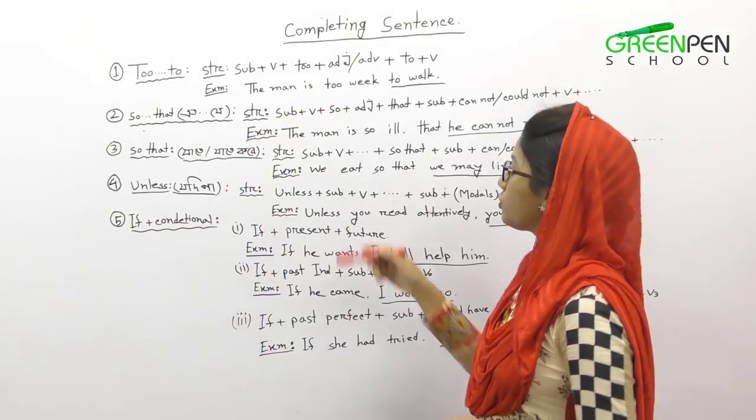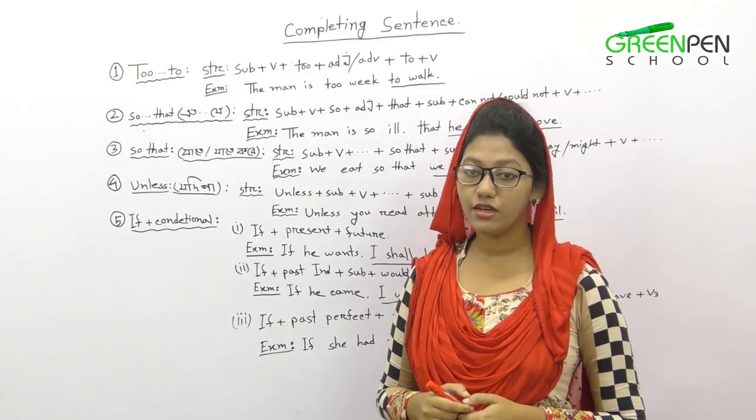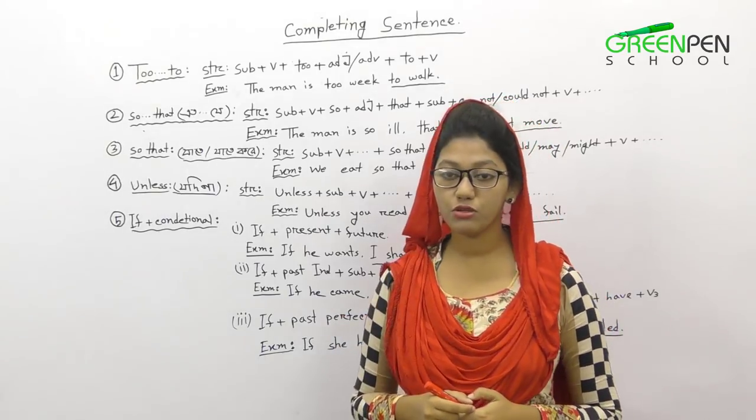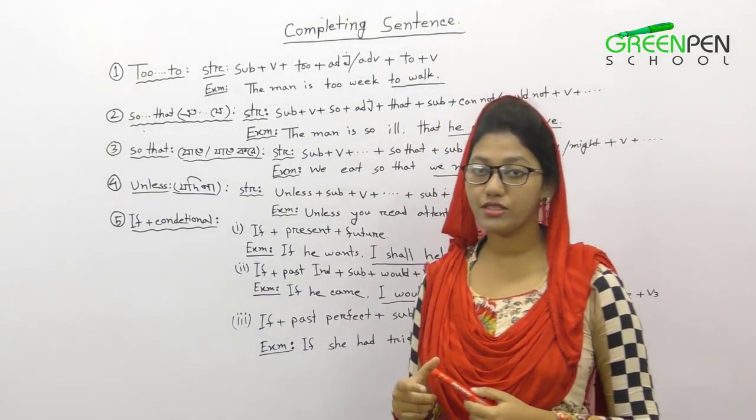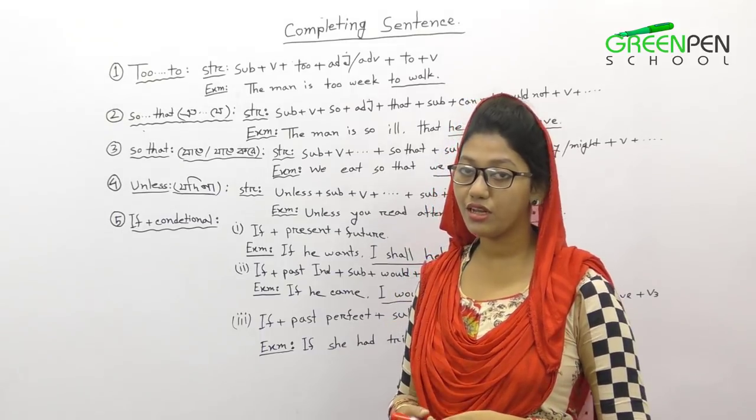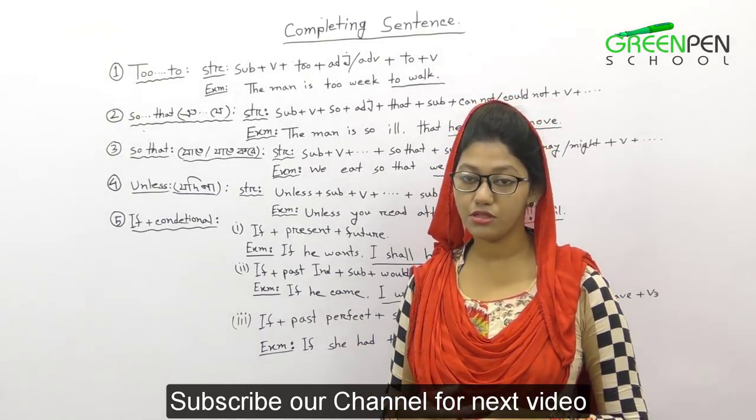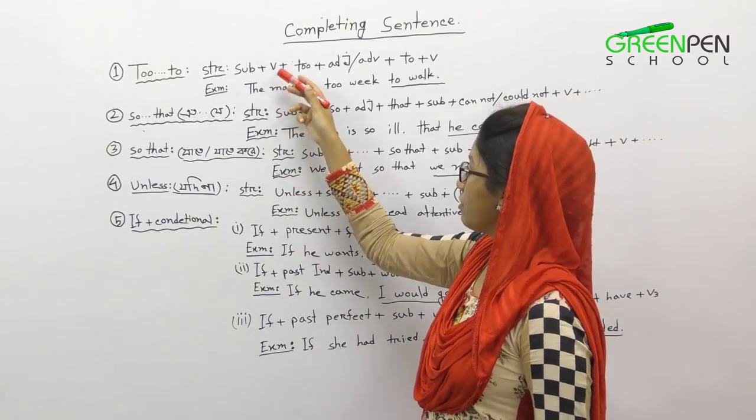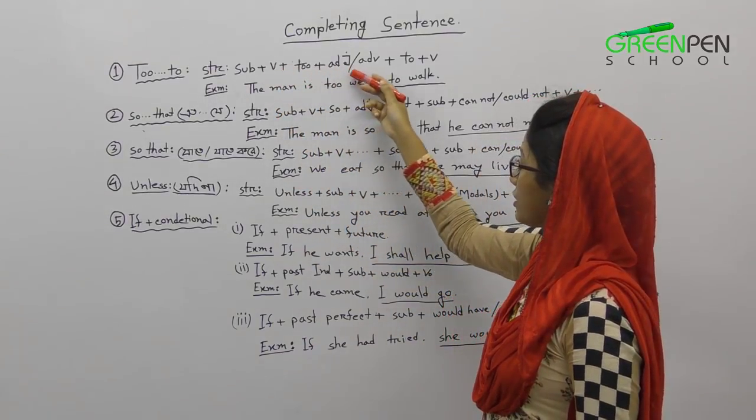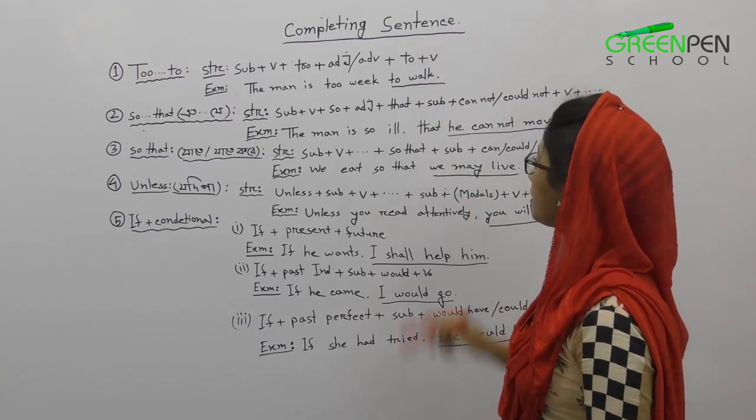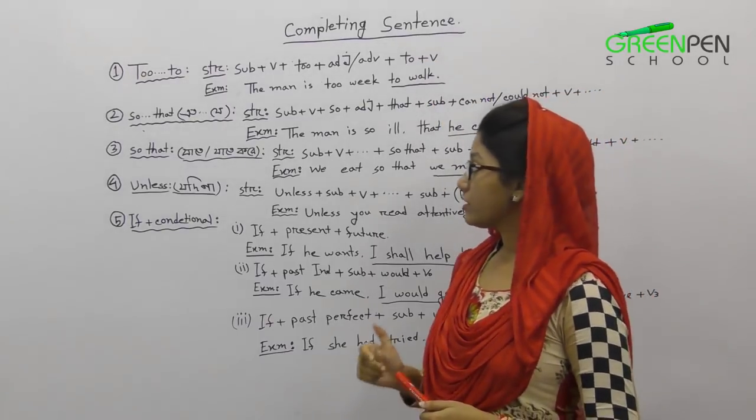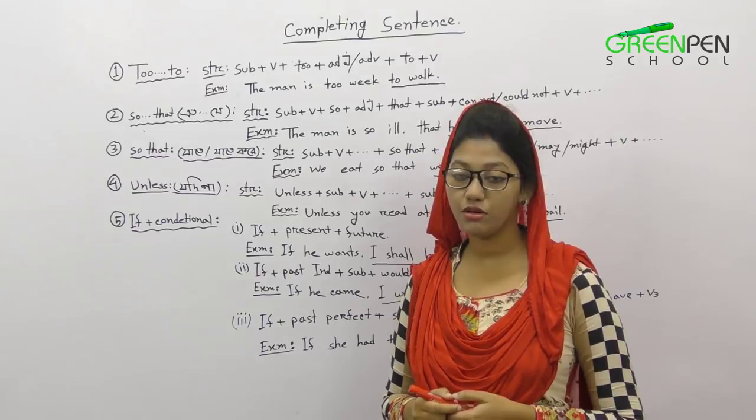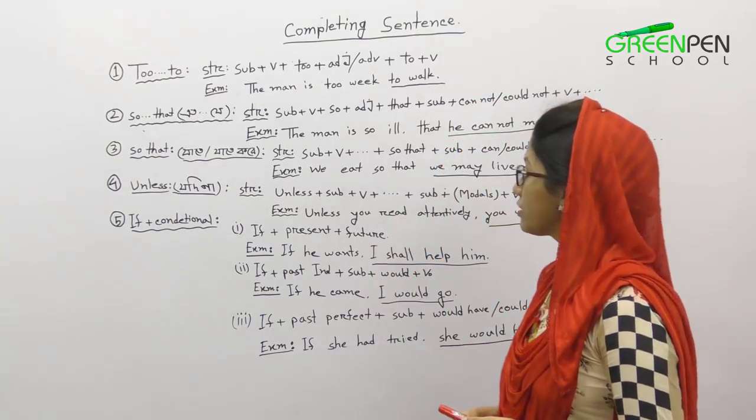Now we have to replace negative noises and have a complete sentence. In complete sentence, we will have the structure. The structure is subject plus verb plus too plus adjective plus too plus verb. If you want to give an example, it will be easy. For example, the subject position is the man.